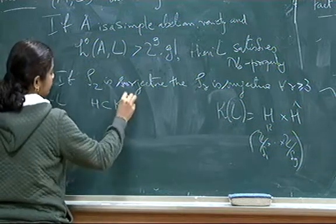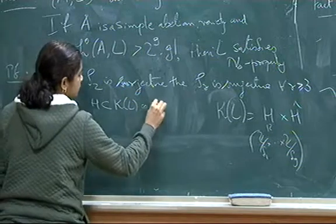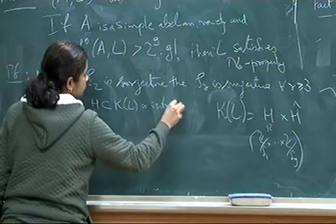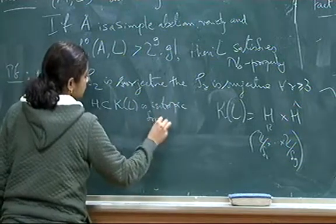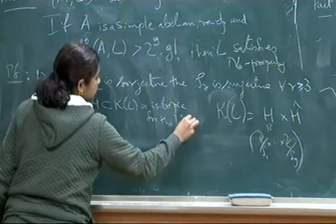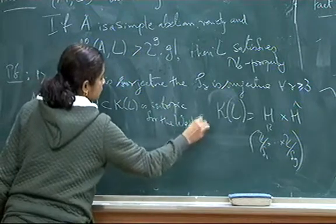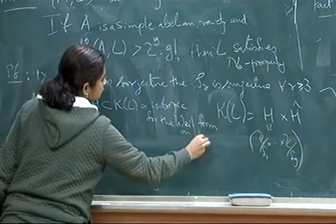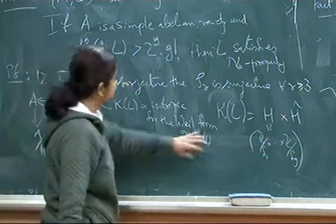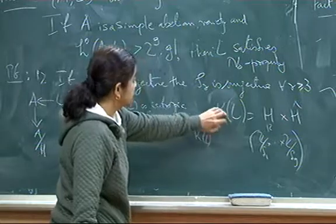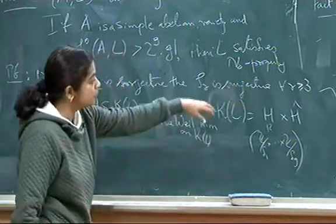It is inside K of L. Well form is essentially saying that because as we said that this theta group and K L, so they fit in a central extension.